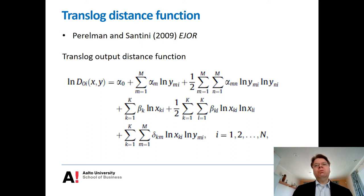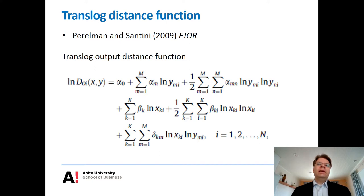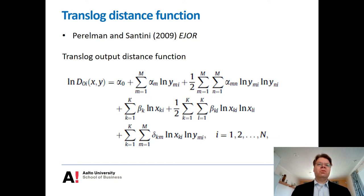I will mainly focus on the output-side alpha coefficients. Worth noting is that this Translog formulation applied symmetrically to all inputs and all outputs doesn't inherently distinguish between an output distance function, an input distance function, or a directional distance function. We will need additional regularity properties on the parameters to ensure this function is actually an output distance function.